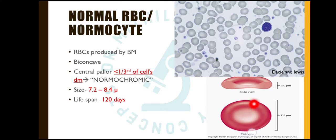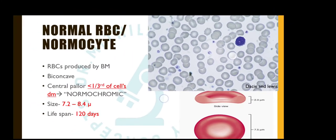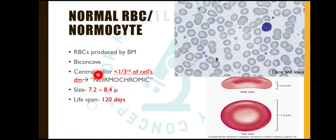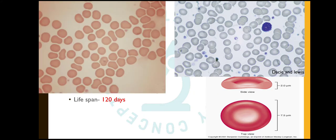In the side view we can see it is biconcave, but when we see from the top it appears spherical in shape. In the peripheral blood film these cells look round. The central pallor is important: it is less than one third of the diameter in a normal normocyte, and when the central pallor is less than one third, it is called a normochromic RBC. The size of an RBC is 7.2 to 8.4 microns. In a peripheral smear we compare it with the nucleus of the small lymphocyte, which has the same size. This allows us to determine whether the RBC is normocytic, microcytic, or macrocytic. The lifespan of an RBC is 120 days.